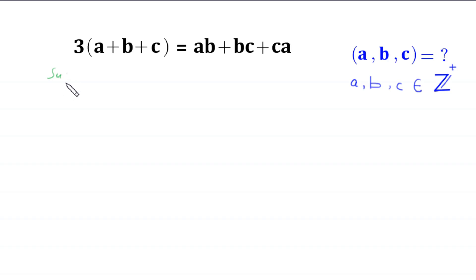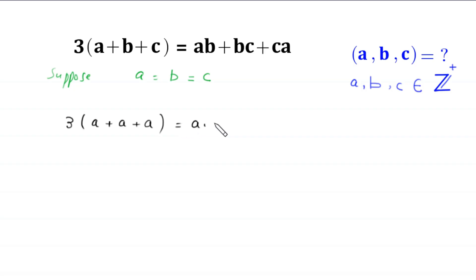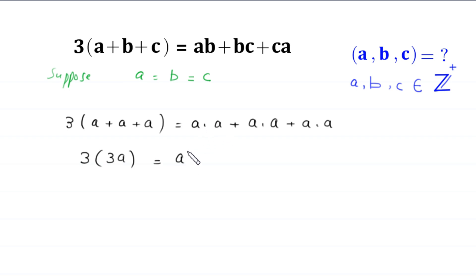First, we suppose that a is equal to b and b is equal to c. So this original equation will become three times (a plus a plus a) is equal to a times a plus a times a plus a times a. Simplifying, three times 3a becomes 9a, equal to three a squared.